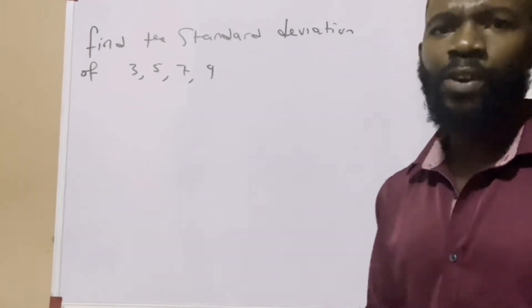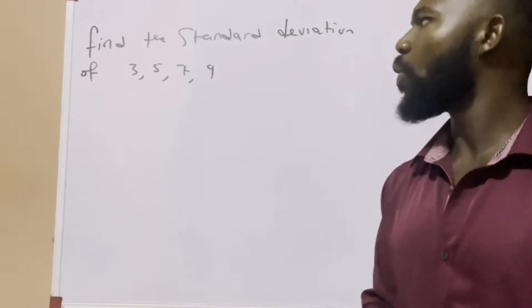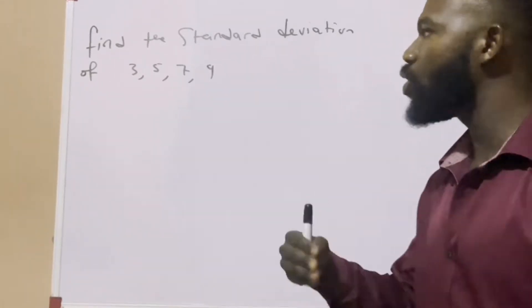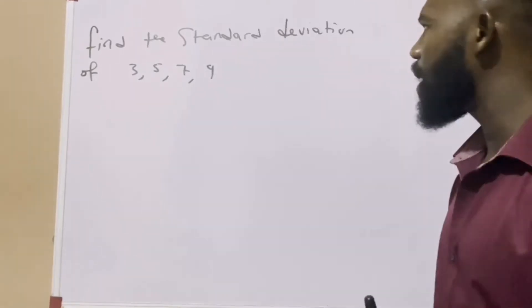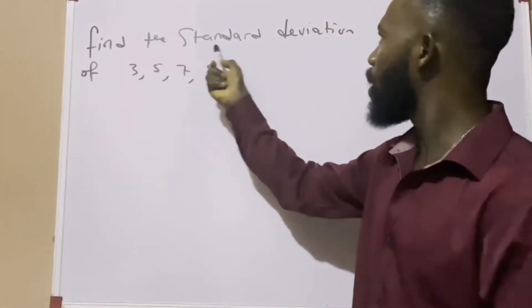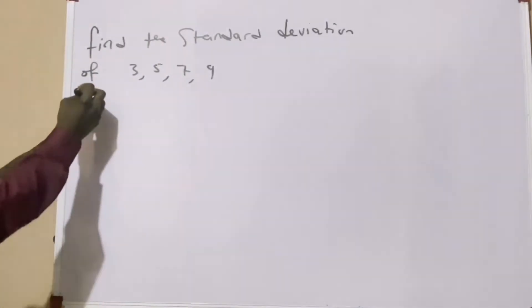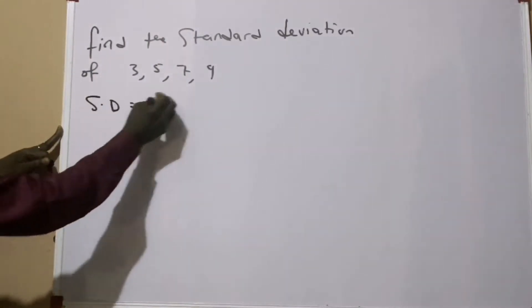Now as we all know, standard deviation is the square root of variance. So when you are given sets of data which can be grouped or ungrouped, how do you go about it? Well, in today's episode we shall be looking at ungrouped data and how we can solve their standard deviation.